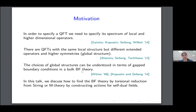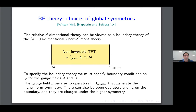The boundary conditions for this BF theory tell us about the possible choices of symmetries, as we will see in the next slide. The aim of this talk is to discuss how we can obtain this BF theory from a reduction of a string theory or M-theory by looking at actions for self-dual fields that live in M-theory or string theory. The BF theory has an action of the form k integral over a d+1 dimensional space of B wedge dA, where dA is F — that's why it's called BF theory.